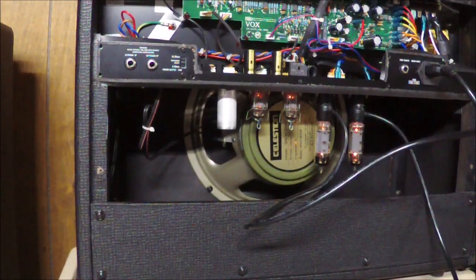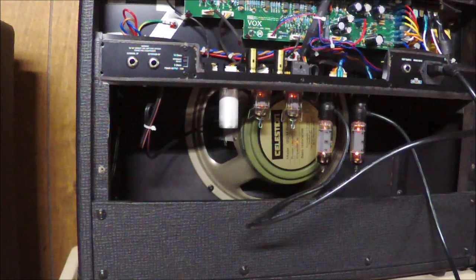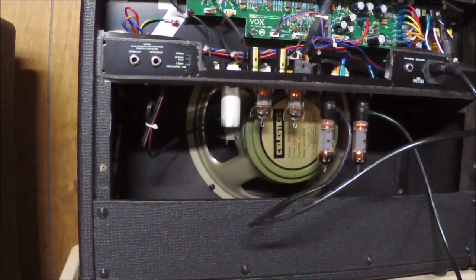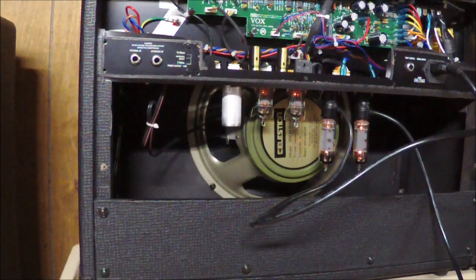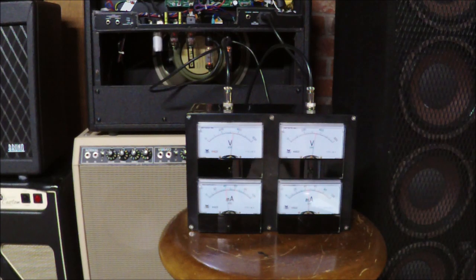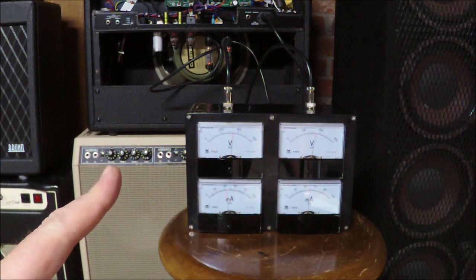The super deluxe version of the Bias Boss includes probes for EL84 type tubes or 6BQ5s if you prefer to call them. So the owners of Vox or Mesas or Marshalls or Fenders that use 6BQ5s or EL84s, whichever you prefer to call them, now you can test too.